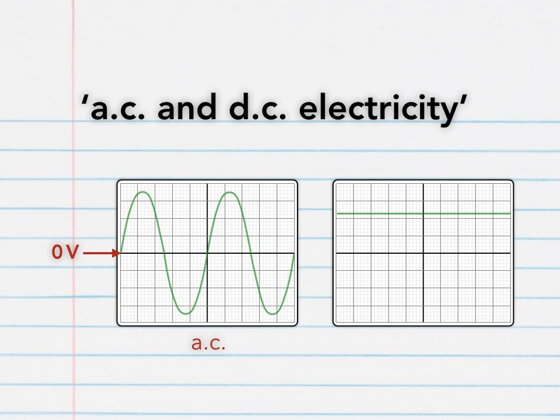The second trace, however, is DC, direct current, because it's entirely above the central line. Although this trace would also be DC, as it's entirely below the central line.